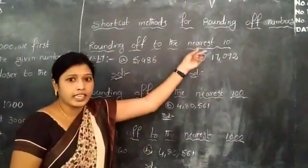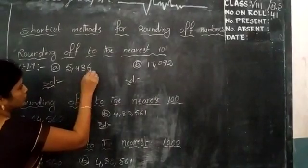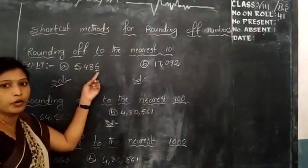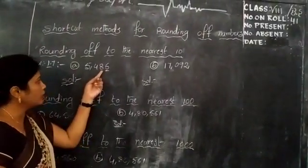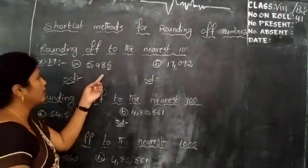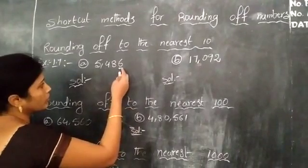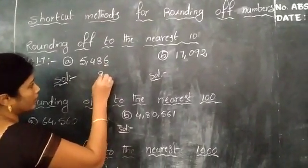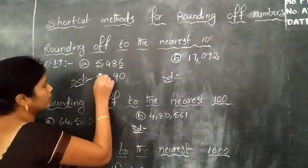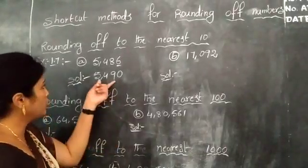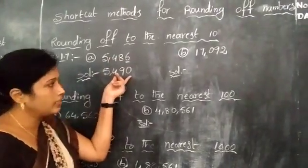For rounding to the nearest 10, we observe the 1's place. Here the 1's place digit is 6, which is more than 5. So the 10's place value increases by 1, and the 1's place becomes 0. Retain the other digits as they are. So the rounded figure of 5483 is 5490.